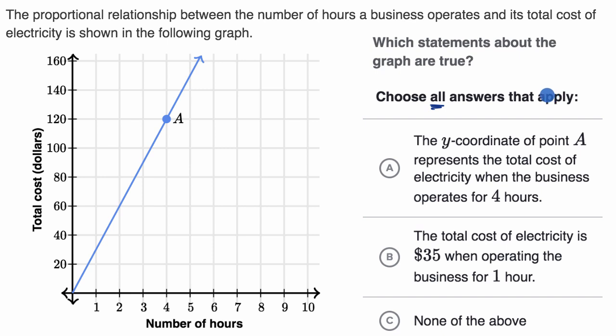All right, now let's do this together. Before I even look at the choices, let me analyze this a little bit. It is a proportional relationship. So we know that our total cost is going to be equal to some constant of proportionality times our number of hours.